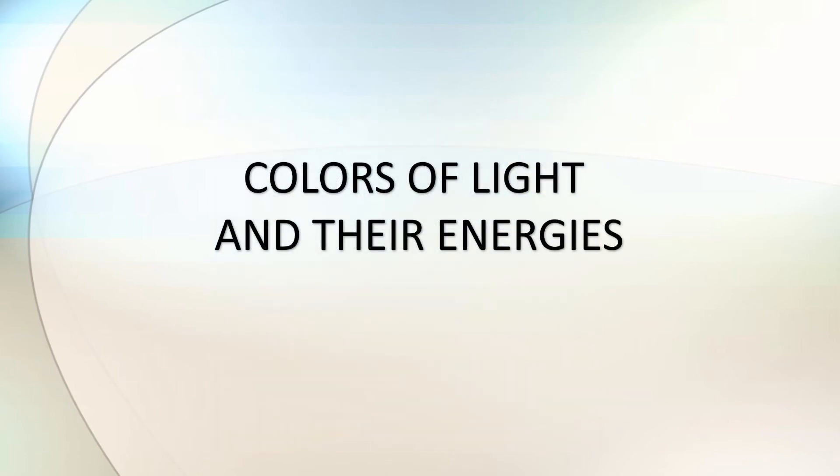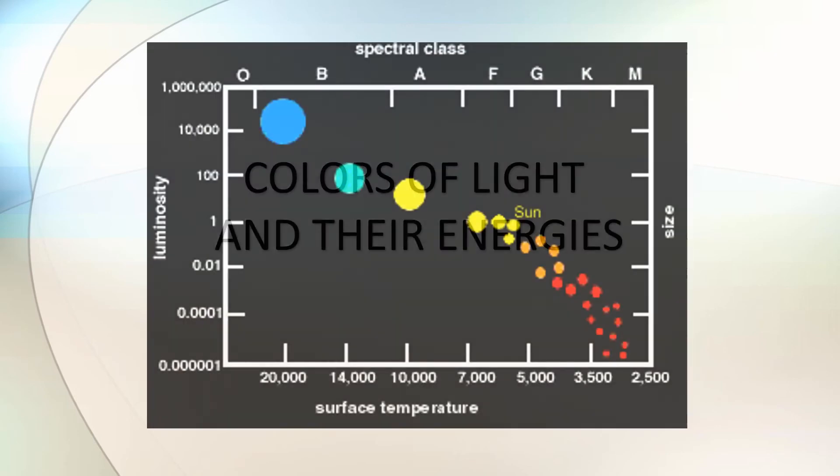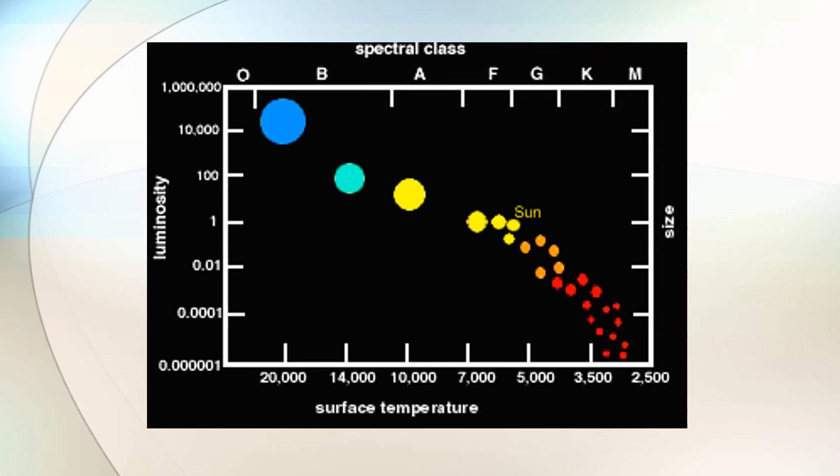How are the colors of light related to their energies? To show the relationship between the colors of light and their energies is this map. This map shows the colors of the stars and their corresponding surface temperatures. The higher the temperature, the higher the energy. You will see that red star has the lowest temperature, thus lowest energy, while blue star has the highest surface temperature and highest energy.